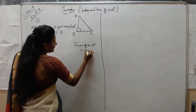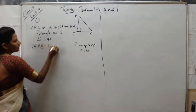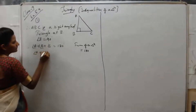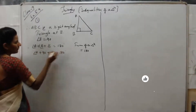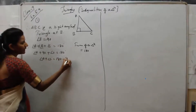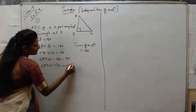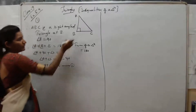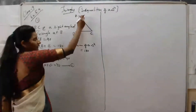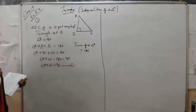The sum of a triangle is 180 degrees, meaning A plus B plus C equals 180 degrees. B is 90, so 90 plus A plus C equals 180. Therefore A plus C equals 180 minus 90, which is 90. Take this as equation 1.